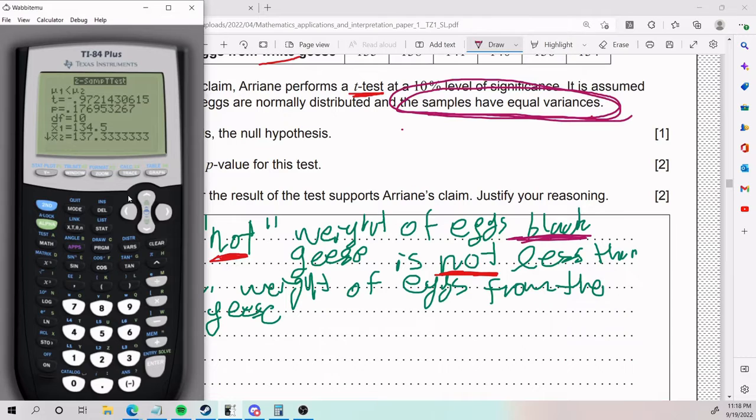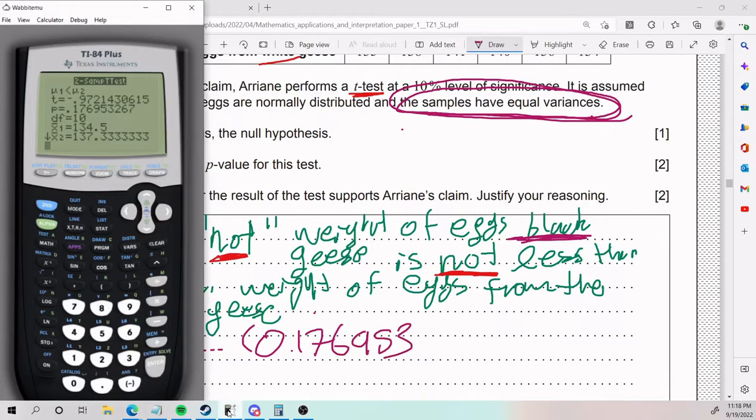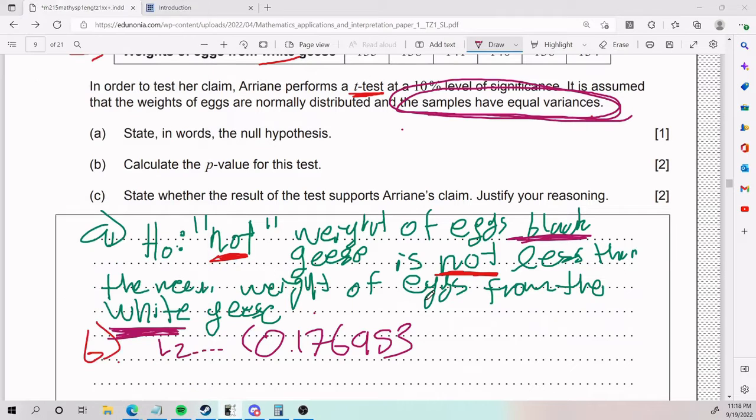So that is my p-value. For part B, my p-value is 0.176953. That is for part B. That is my p-value.